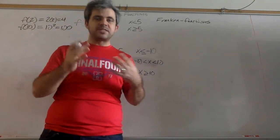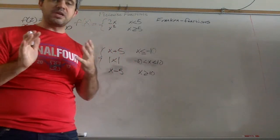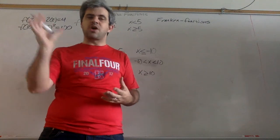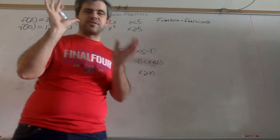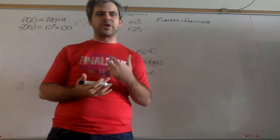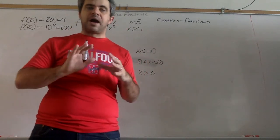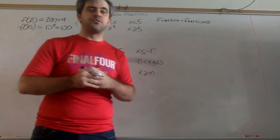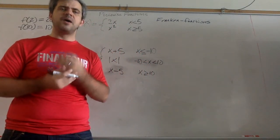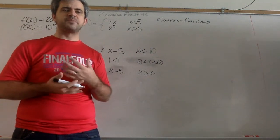These piecewise functions, these Franken functions, they look pretty weird when you graph them because it literally looks like you stuck one graph on top of a totally different graph. My suggestion when you graph these, first of all, I would use Desmos. But if you were trying to graph these by hand, basically graph both functions individually.